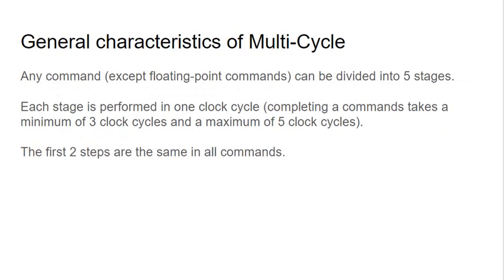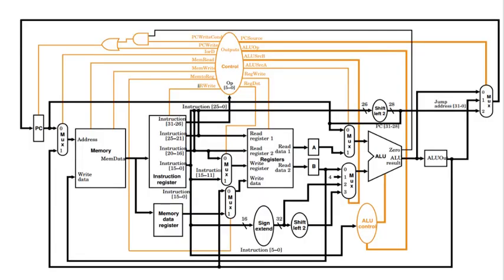There are up to five stages for a command; the minimum number of stages for some instructions will be three clock cycles, and the first two steps are the same for all instructions. Let's look at the structure of the MIPS chip in this configuration. The MIPS is a 32-bit processor. Before, we had memory read directly into lines going into the register file; now we have an intermediate box called the instruction register, which stores the instruction over multiple stages of execution.